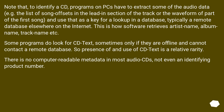To identify a CD, programs have to extract some of the audio data — for example the list of song offsets in the lead-in section, or the waveform of part of the first song — and use that as a key for a lookup in a database, typically a remote database on the internet. This is how software retrieves artist name, album name, track name, etc. Some programs do look for CD Text, sometimes only if they are offline and cannot contact a remote database. So presence and use of CD Text is a relative rarity. There is no computer-readable metadata in most audio CDs, not even an identifying product number.